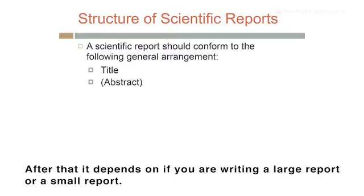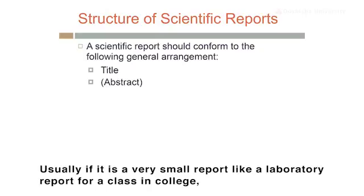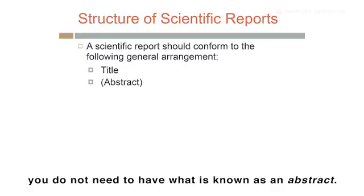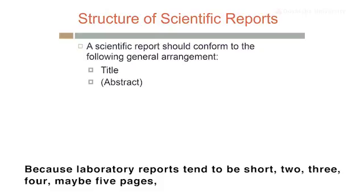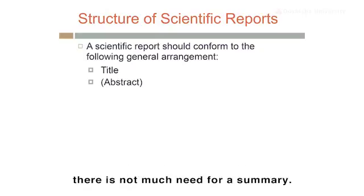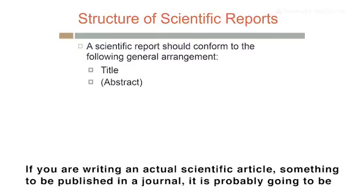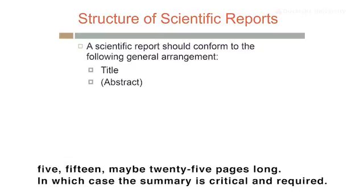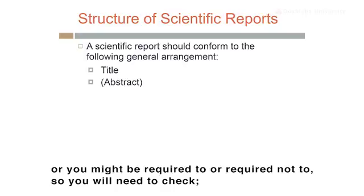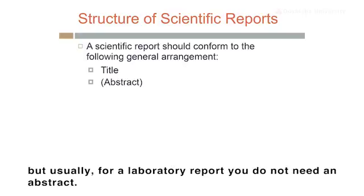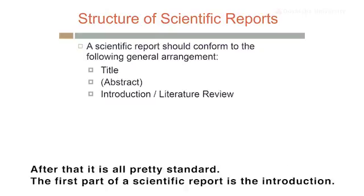First there's a title — probably not a surprise. After that, it depends on whether you're writing a large or small report. Usually, if it's a very small report like a laboratory report for a college class, you do not need an abstract. An abstract is basically a one-paragraph summary of the information in the report. Because laboratory reports tend to be short — two, three, four, maybe five pages — there's not so much need for a summary. But if you're writing an actual scientific article to be published in a journal, it's probably going to be 5 to 25 pages long, in which case the summary is critical and required.